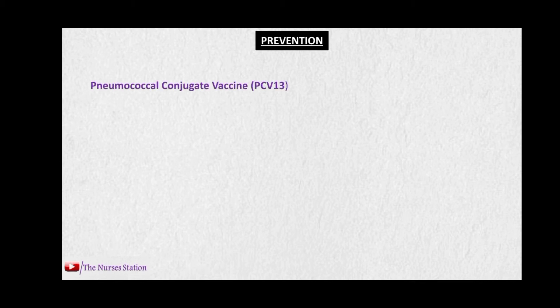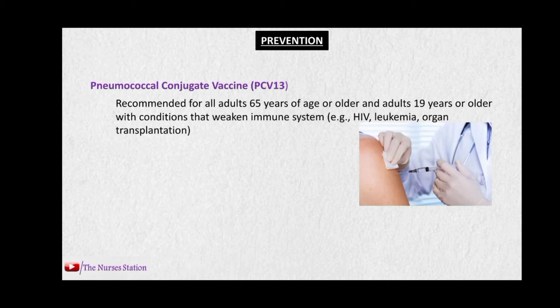Pneumonia is a preventable condition. There are two types of vaccines. The first is the pneumococcal conjugate vaccine PCV13, active against 13 strains of Streptococcus pneumoniae. It is recommended for all adults 65 years of age or older, and adults 19 years or older with conditions that weaken the immune system, like HIV, leukemia, or organ transplantation.